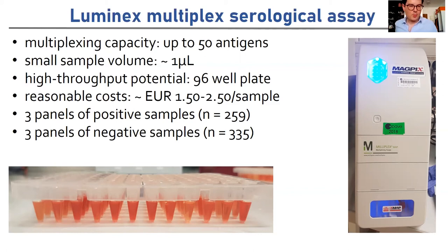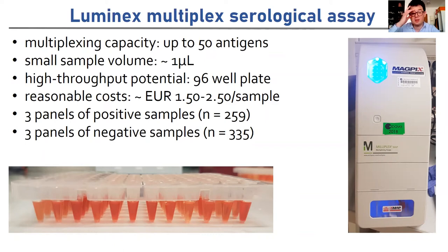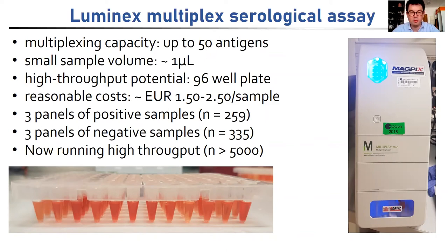In the first phase of the project, we validated this on positive and negative samples. Positive samples were collected from individuals with a PCR-confirmed SARS-CoV-2 infection. Negative samples were from blood donors collected in 2019, before the pandemic. The data I'm going to show is based on about 600 such samples. More recently we're running this in a much more high-throughput fashion, and we've now processed approximately 5,000 samples with that number increasing every day.